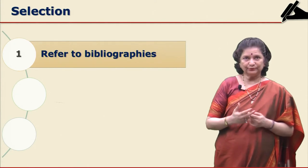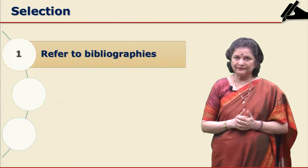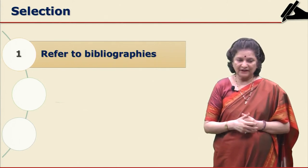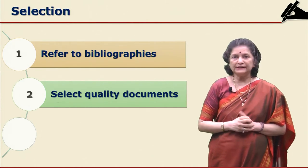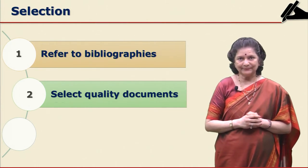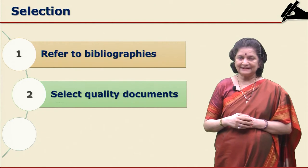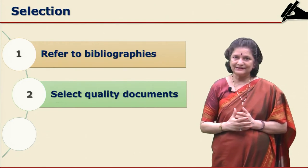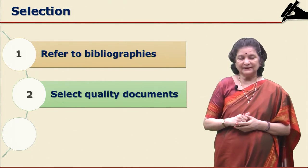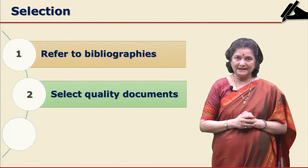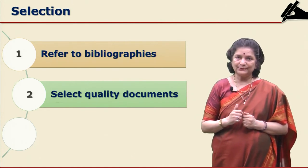For the selection process: if you find any ready-made bibliographies — whether on the internet, in book form, or in a journal article — refer to those bibliographies. The next stage after referring to the bibliography is to select quality documents. Quality documents are primary documents based on original research, such as journal articles, standards, patents, and also theses and dissertations. Give priority to quality documents and select them for your literature review.